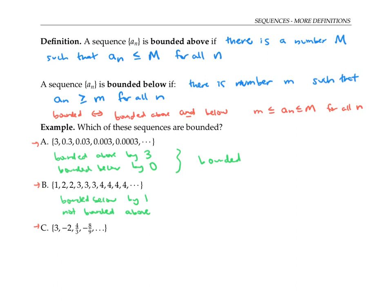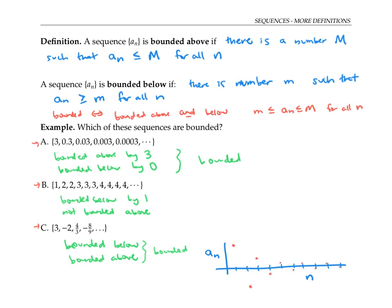The third sequence is bounded both below and above. If we graph n on the x-axis and a sub n on the y-axis, the terms bounce around between positive and negative values. But since we're always multiplying by negative two-thirds to get from one term to the next, the oscillations are dying down in magnitude, and in fact the terms can never get above three or below negative two.